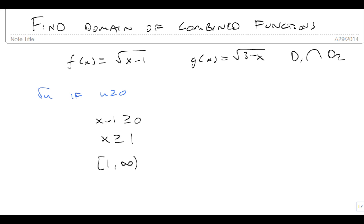g of x, on the other hand, same thing. But we're going to do 3 minus x is greater than or equal to 0. So 3 is greater than or equal to x. And if we switch sides, x is less than or equal to 3, which goes from minus infinity to 3.